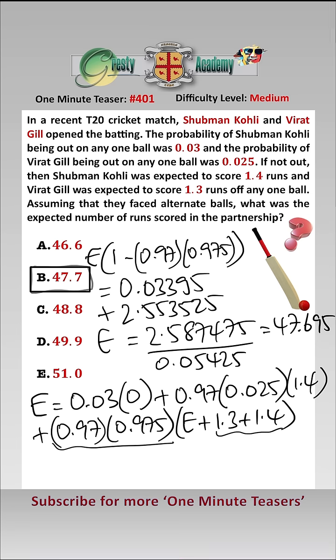Answer B is the expected number of runs scored in their partnership.